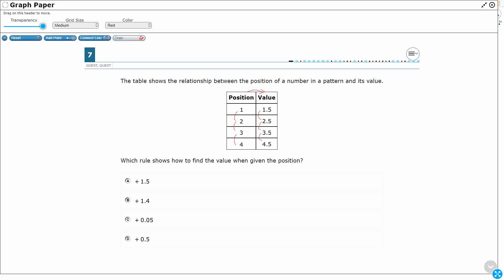So the first position is 1.5, second position is 2.5. So what's the relationship between the value and the position? Well, let's see. How do we go from 1 to 1.5? Well, we can either multiply something or we can add something.